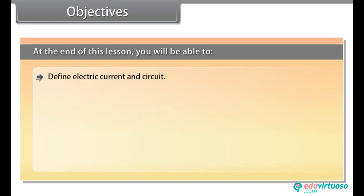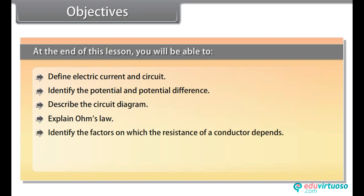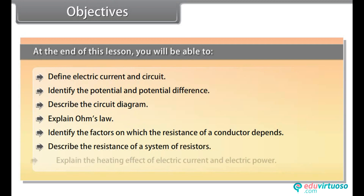At the end of this lesson, you will be able to: define electric current and circuit; identify the electric potential and potential difference; describe the circuit diagram; explain Ohm's law; identify the factors on which the resistance of a conductor depends; and describe the resistance of a system of resistors, the heating effect of electric current, and electric power.